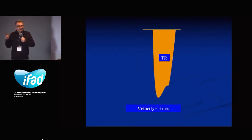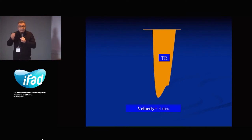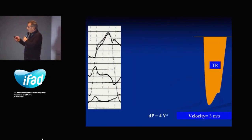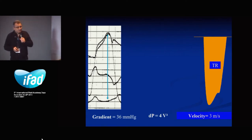Here is a flow — a tricuspid regurgitation. If you assess it from the apex, the flow goes from the right ventricle to the right atrium, moving away from the probe, so it is a negative flow. If the velocity of this flow is three meters per second, converting to pressure gradient: four times three squared equals 36 millimeters of mercury. This represents the pressure gradient between the right ventricle and the right atrium during systole.